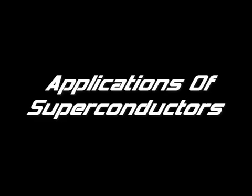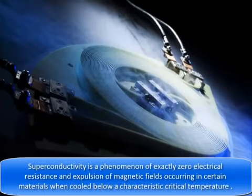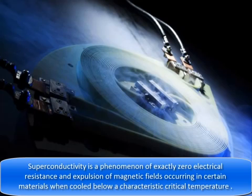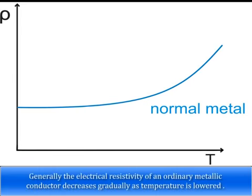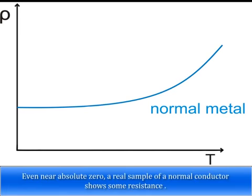Applications of Superconductors. Superconductivity is a phenomenon of exactly zero electrical resistance and expulsion of magnetic fields occurring in certain materials when cooled below a characteristic critical temperature. Generally, the electrical resistivity of an ordinary metallic conductor decreases gradually as temperature is lowered. Even near absolute zero, a real sample of a normal conductor shows some resistance.